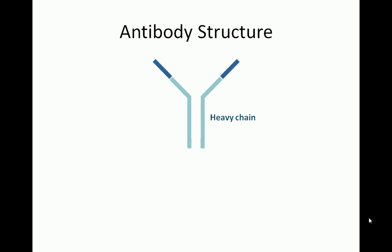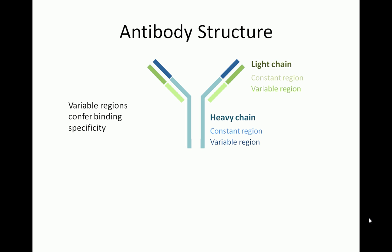We will first review antibody structure. All antibodies are made up of two heavy chains, each of which has a region with a constant or conserved structure, and a region whose structure varies from antibody to antibody. All antibodies also have two light chains, which also have a constant region and a variable region. The ability of antibodies to bind to specific pathogens comes from the variable regions of the light and heavy chain.